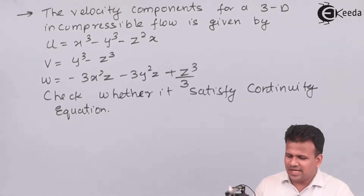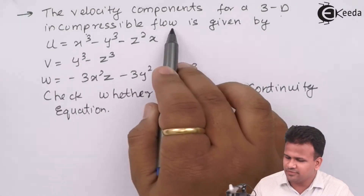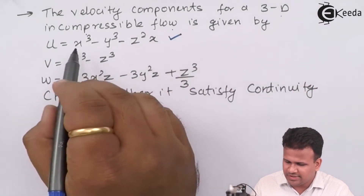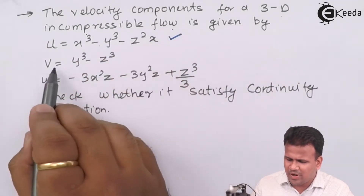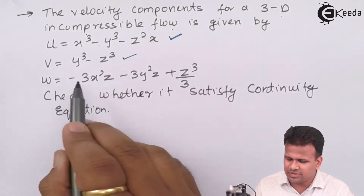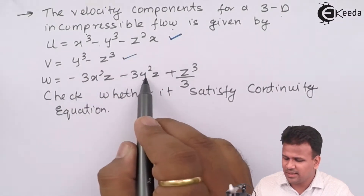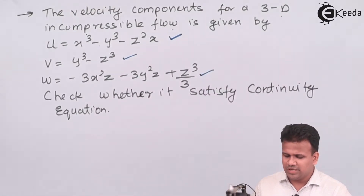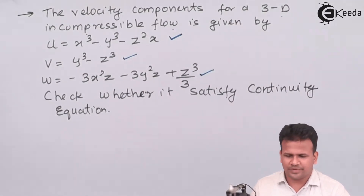The problem says that the velocity components for three-dimensional incompressible flow are given as u = x³ − y³ − z²x, v = y³ − z³, and w = −3x²z − 3y²z + z³. Check whether it satisfies the continuity equation or not.